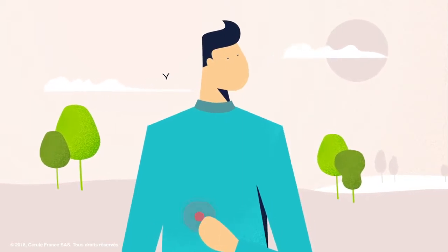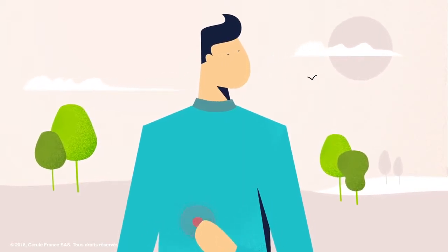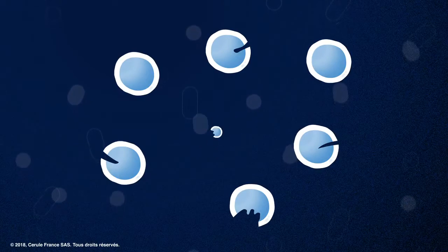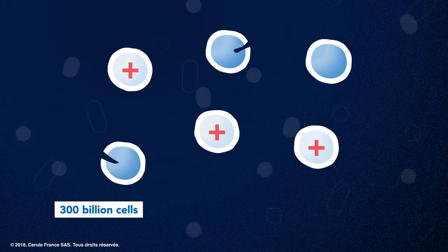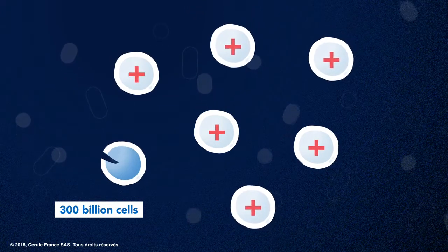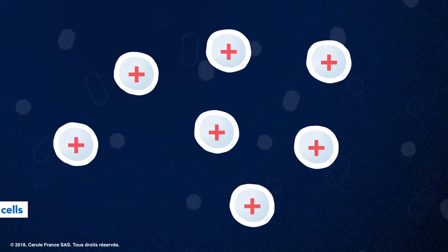Do you know how the human body replenishes and repairs itself? Every day, 300 billion old or damaged cells die and are eliminated from our body and need to be replenished or repaired.